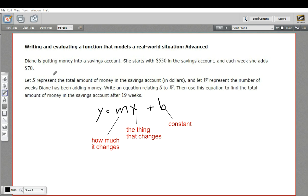So let's read this and see if we can fit it into this form. It says Diane is putting money into a savings account. She starts with $550 and each week she adds $70. Okay. So there we have all of the pieces that we need.